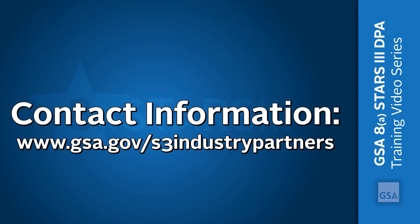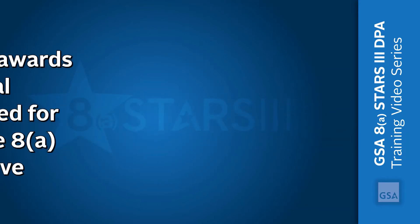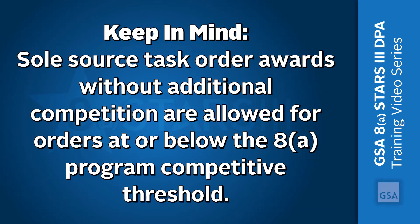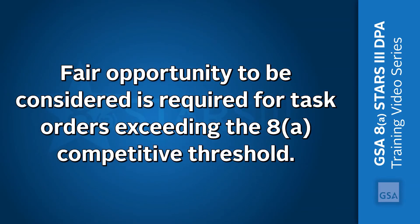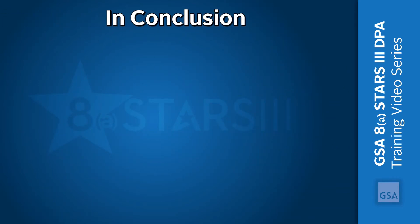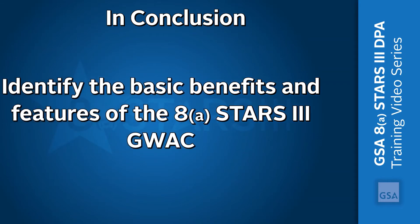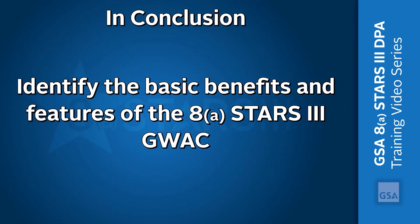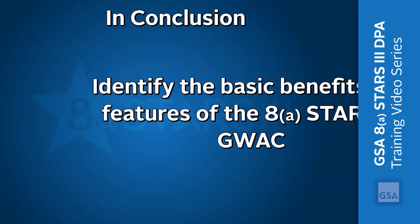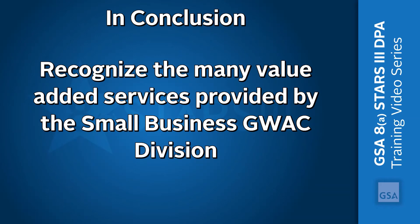Task order requests can be submitted through any method your agency prefers. Please keep in mind that sole source task order awards without additional competition are allowed for orders at or below the 8A program competitive threshold, and SBA offer and acceptance is required. Fair opportunity to be considered is required for task orders exceeding the 8A competitive threshold. You should now be able to identify the basic benefits and features of the 8A STARS III GWAC and recognize the many value-added services provided by the Small Business GWAC division.